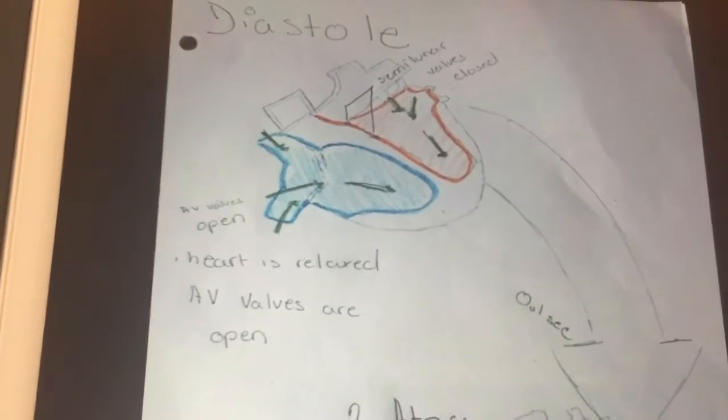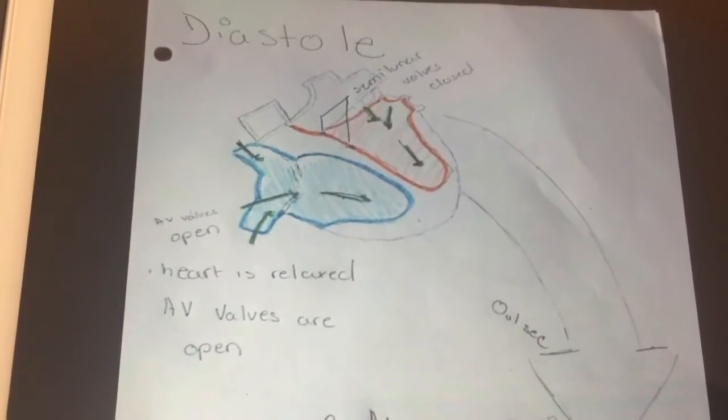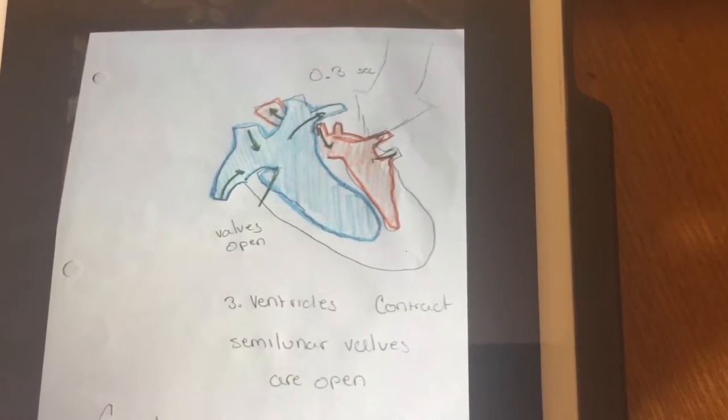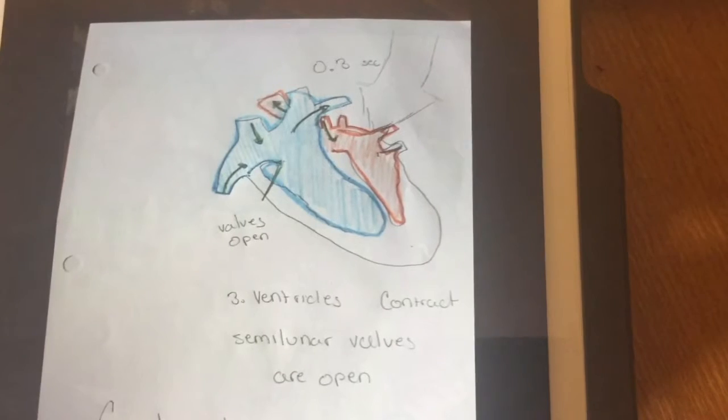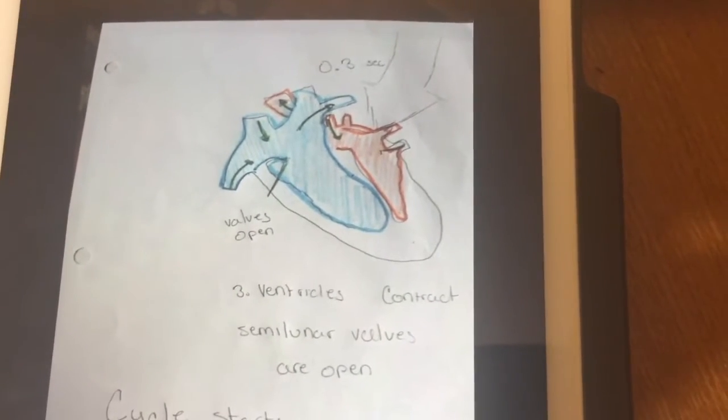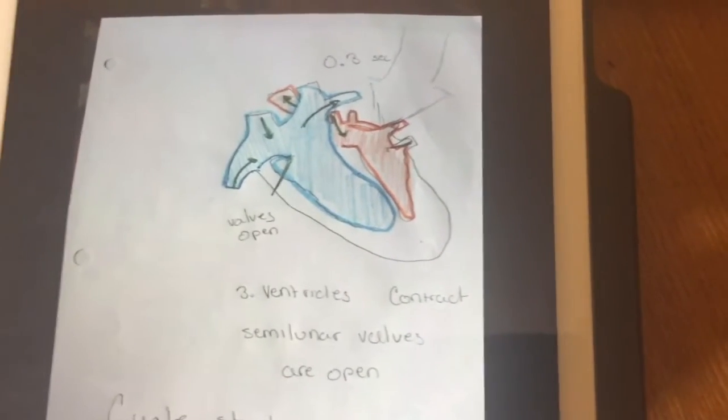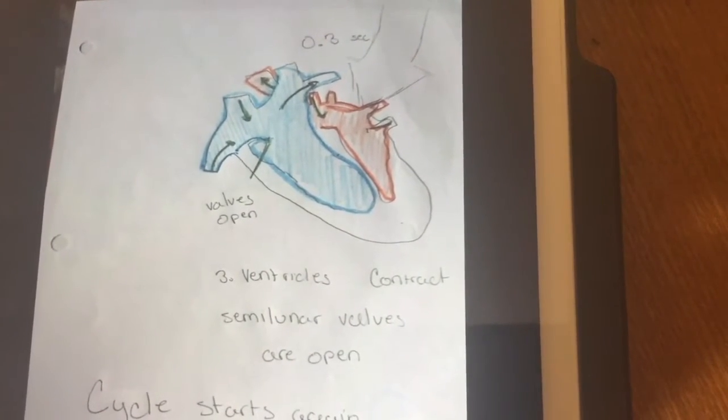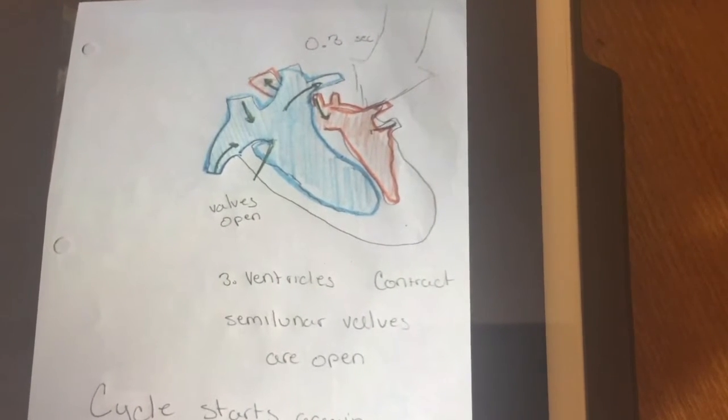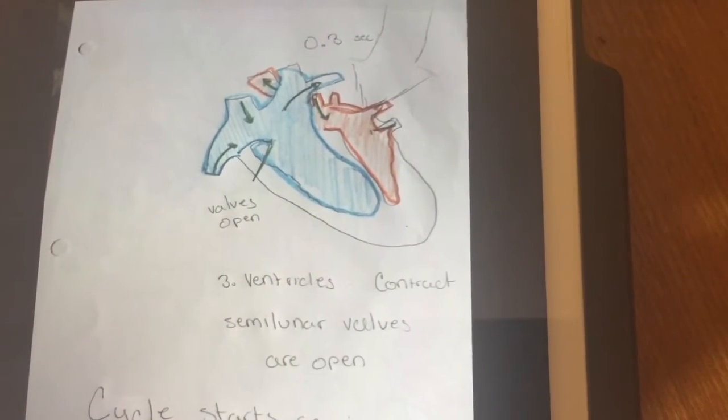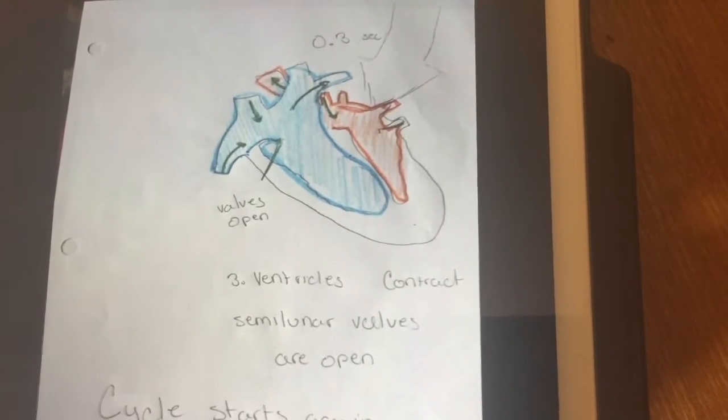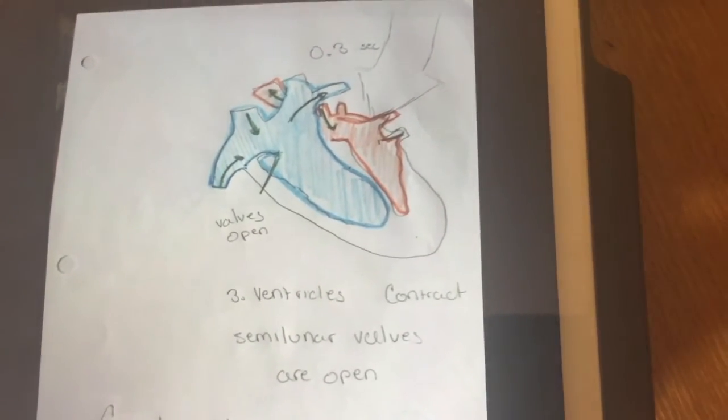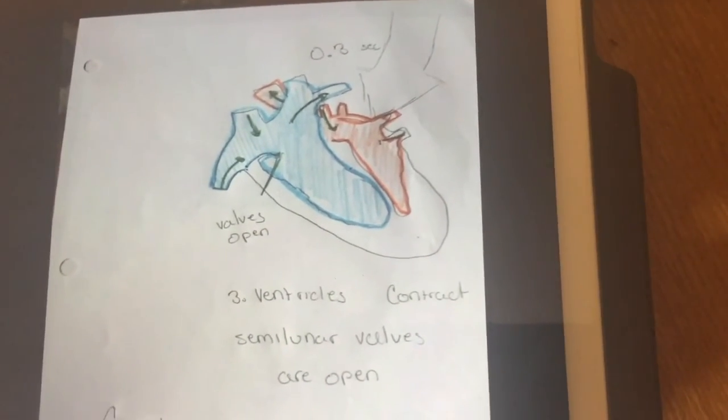From there we move on to the ventricular systole. The ventricular walls contract, which is basically what systole means, so then the pressure elevates in the ventricle. That causes the atrial ventricular valve to close, preventing backflow to the atrial. So then the semilunar valves—the pulmonary and the aortic ones—open afterwards. The blood flows into the pulmonary artery and the aorta. From then we move on to the next step.